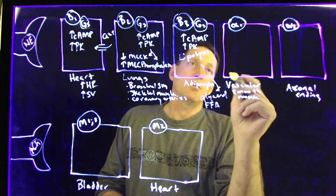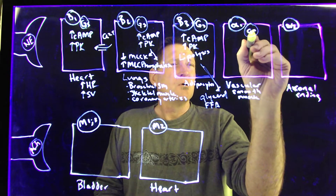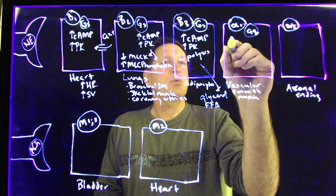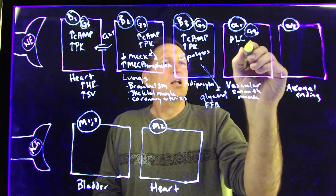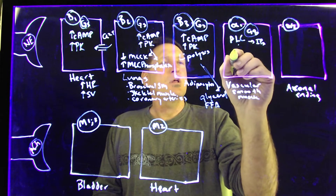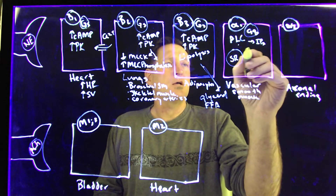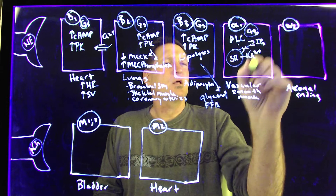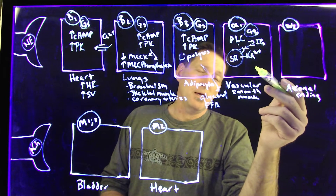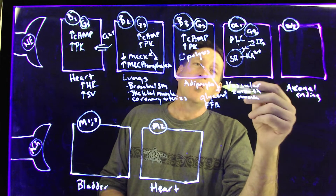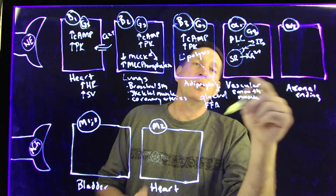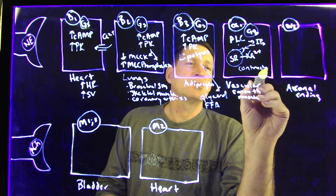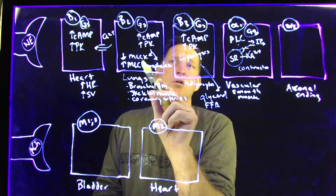Activation of alpha-1 receptors — these are linked to GQ proteins. Norepinephrine plugs in, activates the GQ protein, which activates PLC (phospholipase C), which activates IP3. IP3 diffuses to the sarcoplasmic reticulum where calcium is stored, plugs into the IP3 receptor, and releases calcium. The released calcium forms the calcium-calmodulin complex, which activates myosin light chain kinase, splitting ATP into ADP and phosphate, giving the phosphate to the myosin head — causing contraction. So alpha-1 activation causes contraction, while beta-2 activation causes relaxation.